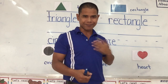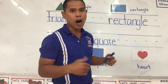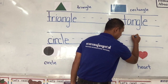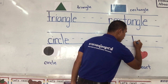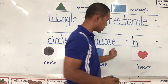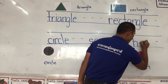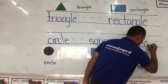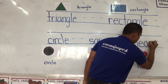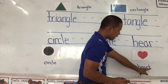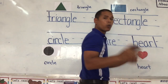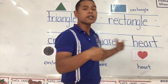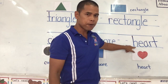Next one — heart. Heart starts with the letter H. The small H: start from the top line, straight down to the bottom line, back up and hook at the middle line, back down to the bottom line. Then E — across, up and over. A — all around, up and down. R — from the middle line, straight down, back up and hook. T — from the top line, straight down, and we cross at the middle line.